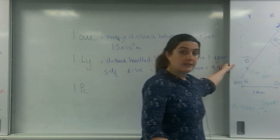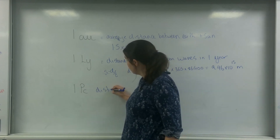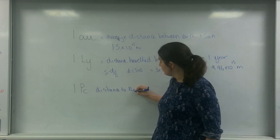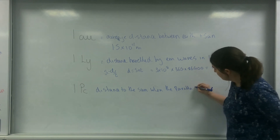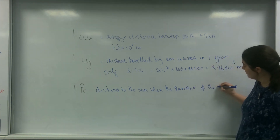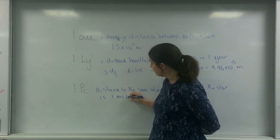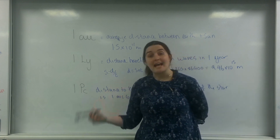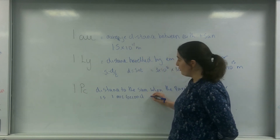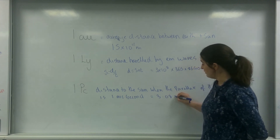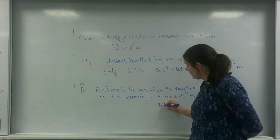A parsec is the distance to a star when the parallax angle is 1 arc second - hence 'parsec', parallax of 1 arc second. That approximately equals 3.08 times 10 to the 16 metres, or as your data sheet also says, 3.26 light years, or 206,265 AU.